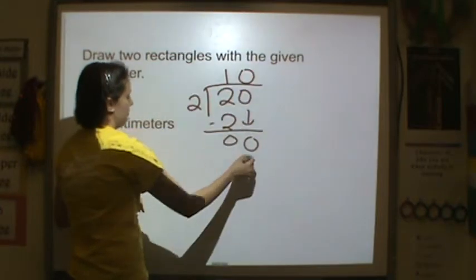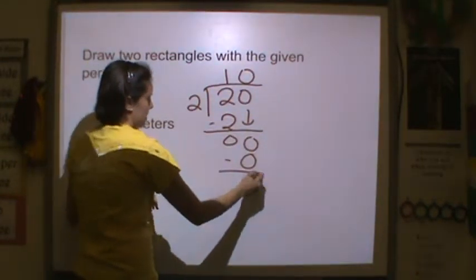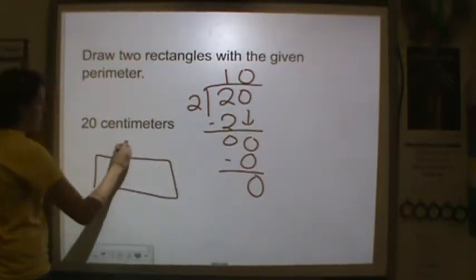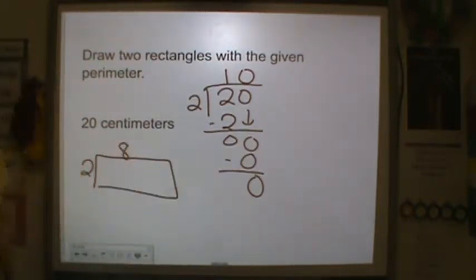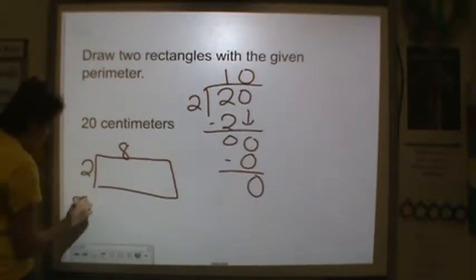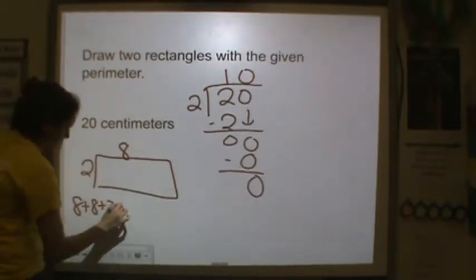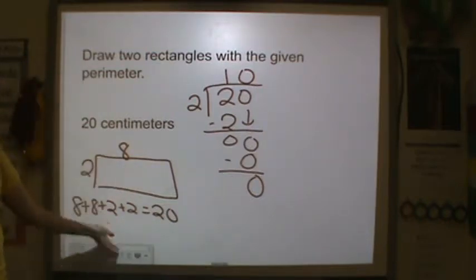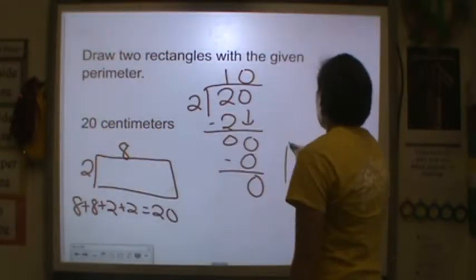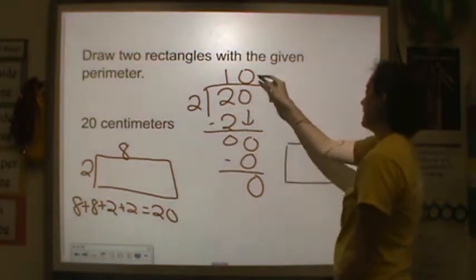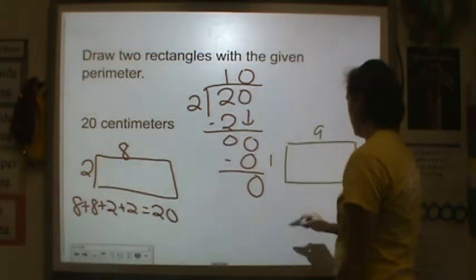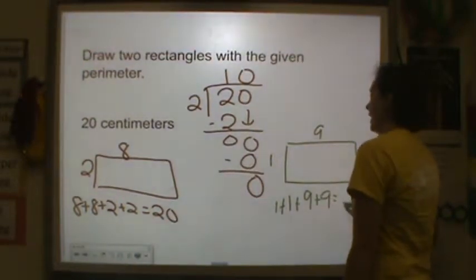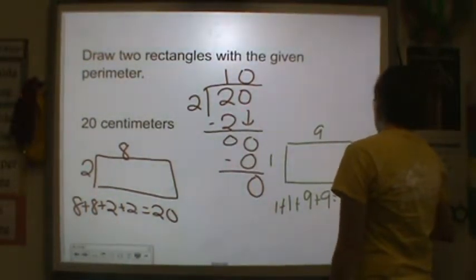How many 2's are in 0? 0, multiply, subtract, got nothing. So two numbers that add up to 10. 8 and 2, those add up to 10. 8 plus 8 plus 2 plus 2, that's equal to 20, if I were to use the perimeter. Let's do another one. Numbers that add up to 10. 1 and 9. 1 plus 1 plus 9 plus 9. That would give me a perimeter of 20 centimeters.